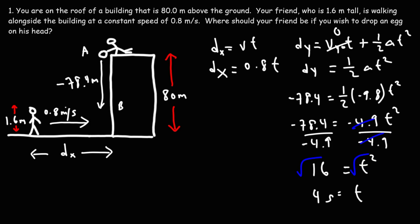So now, how far should your friend be if the egg is going to reach him in 4 seconds? So now, we're going to take this answer and plug it into that formula. So it's simply 0.8 meters per second times 4 seconds. The seconds will cancel.